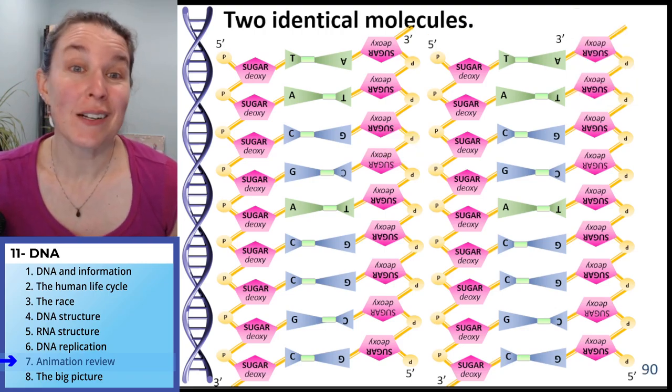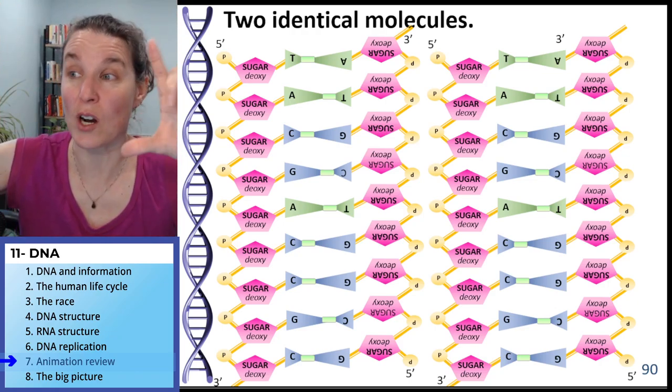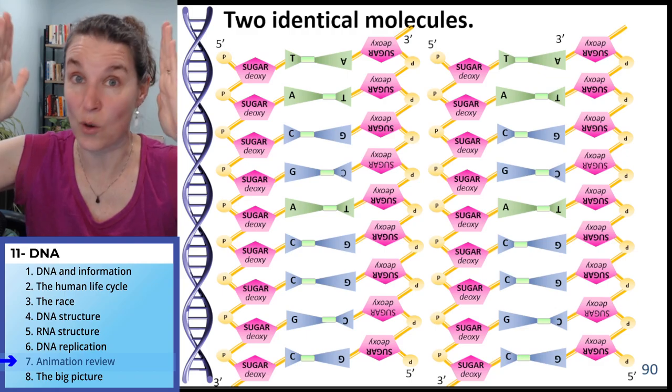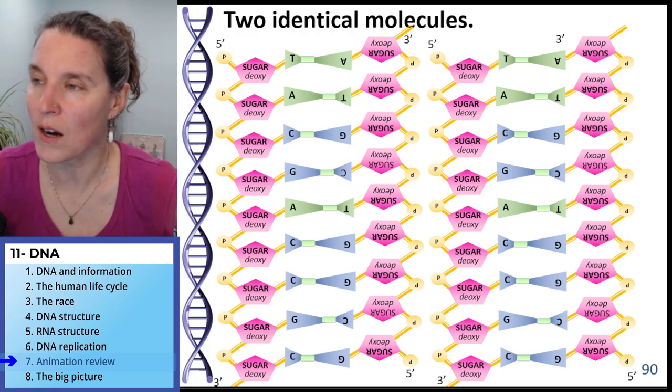Two identical molecules. Started semi-conservative because we started with the outside ends are old DNA. The inside sides are new DNA.